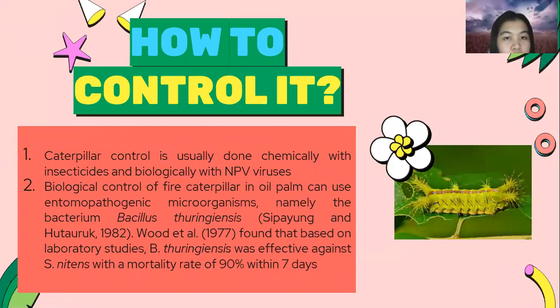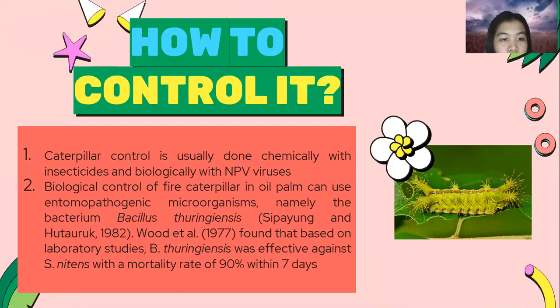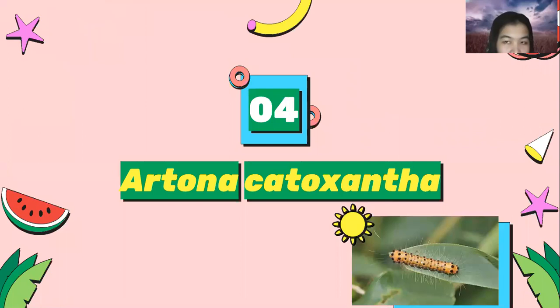How to control the fire caterpillar? Caterpillar control is usually done chemically with insecticides and biologically with NPV viruses. Biological control of fire caterpillar in oil palm can use entomopathogenic microorganisms, namely the bacterium Bacillus thuringiensis (Sipayung and Hutaruk, 1982). Wood et al. found that based on laboratory studies, Bacillus thuringiensis was effective against this caterpillar with a mortality rate of 90% within 7 days.